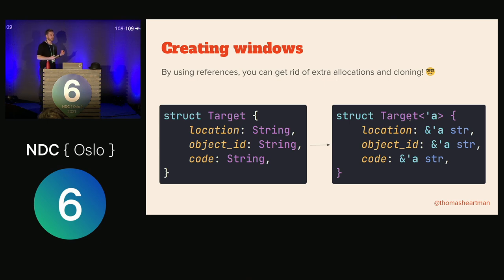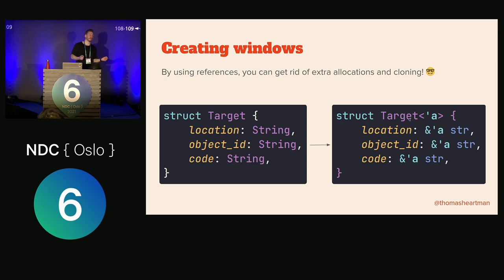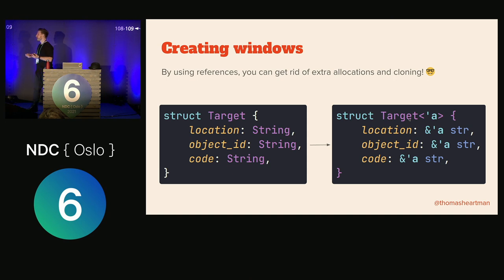In the original version, the target struct — with location, object ID, and code — all used Strings. Strings, as I said, live on the heap; you need to allocate for them. This is why the allocation section on the flame graph just completely went away in the new version — it wasn't as big as deduplication, but it's a useful takeaway. Instead of using Strings and allocating and copying everything, we can just point to where it comes from: 'This is between these two indices in the JSON string.' The weird apostrophe syntax is Rust's lifetimes — complicated but useful when you get used to it.